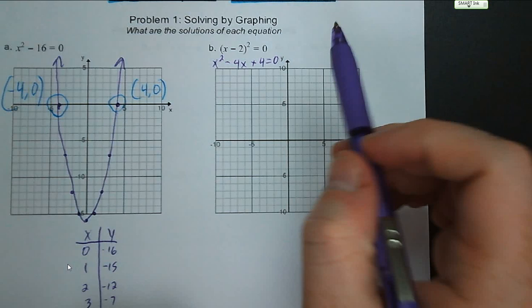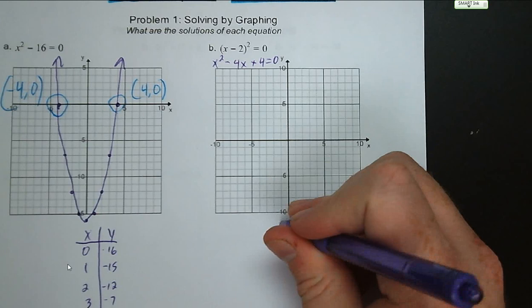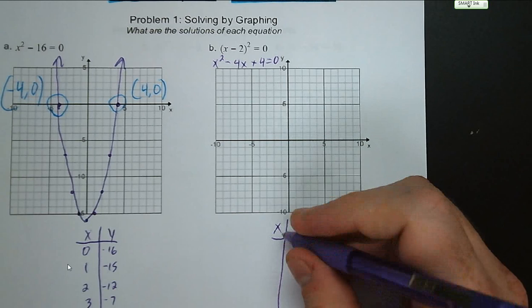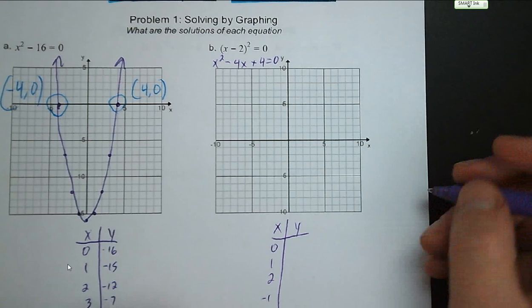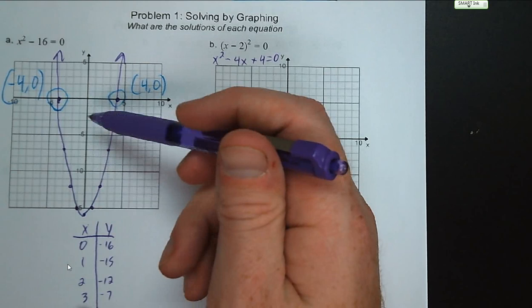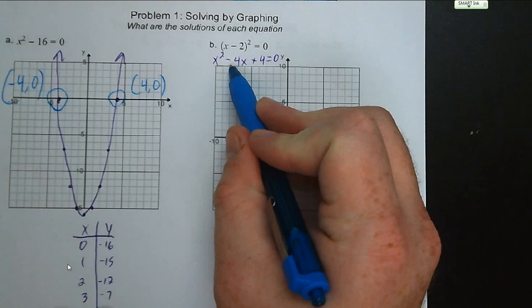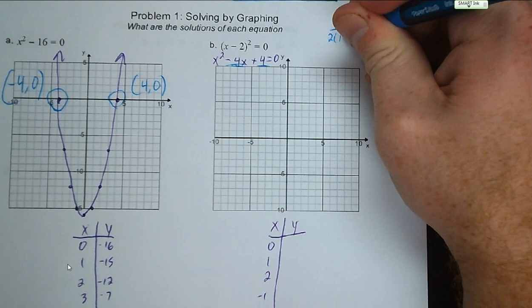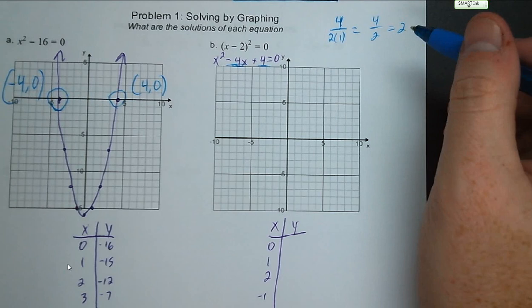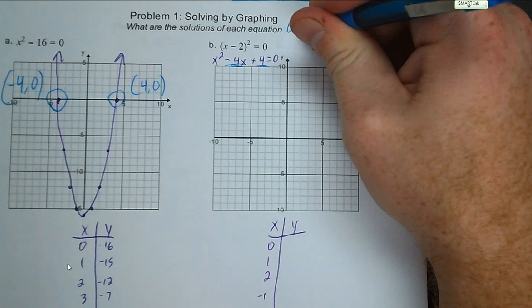We'll use an x and y table of values. We can find the vertex first: it's the opposite of b over 2a, which is positive four over two times one, so four over two. The x coordinate of our vertex is two. Plugging in x equals two: two minus two is zero, zero squared is zero. So two, zero is our vertex.